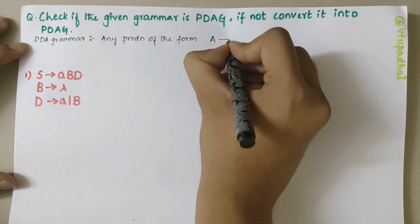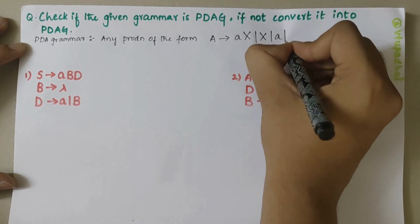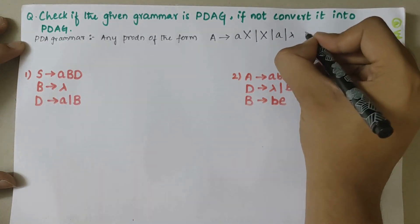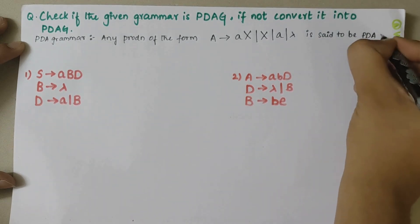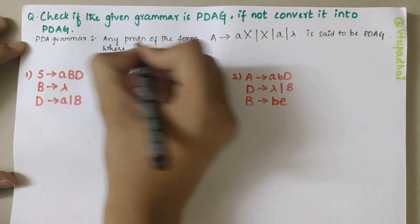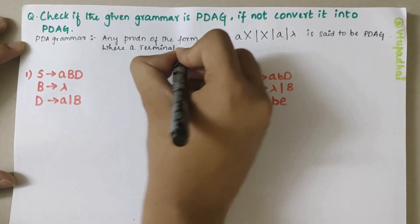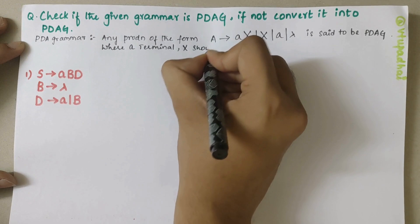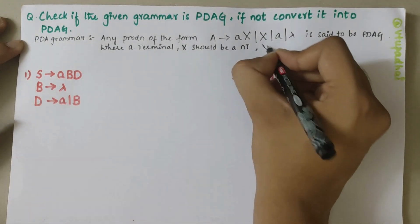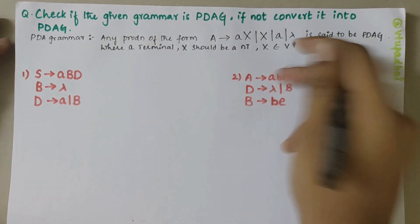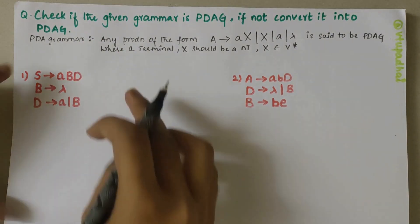Any production of the form A derives aX, or a, or A, or lambda is said to be PDAG — Pushdown Automata Grammar — where 'a' should be a terminal and X should be a non-terminal, or X could be empty. V-star applies here. This is how we define a PDA grammar.